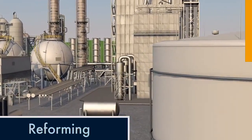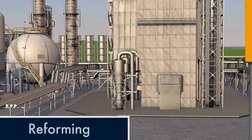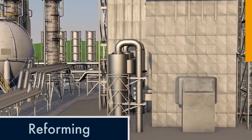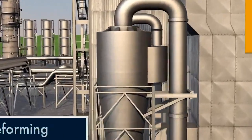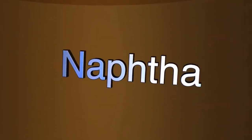Reforming is a process that increases the amount of gasoline produced from crude oil. One of the products separated in the distilling process is a liquid called naphtha.